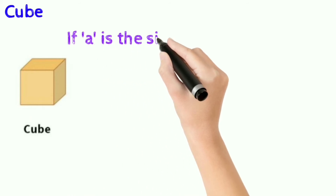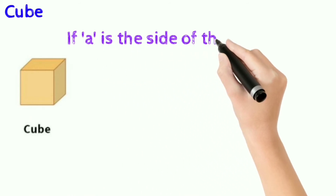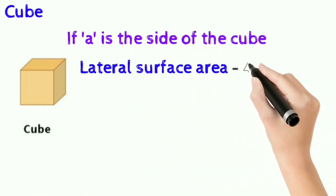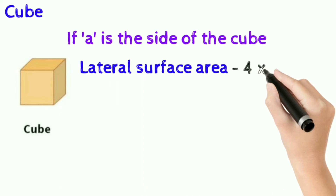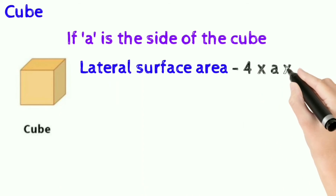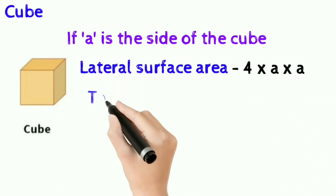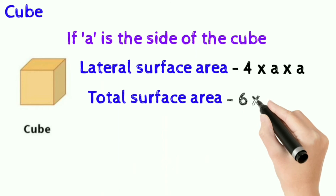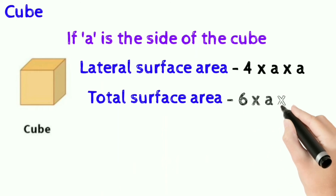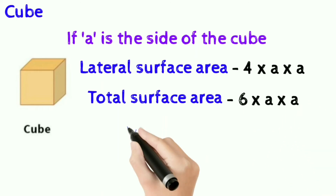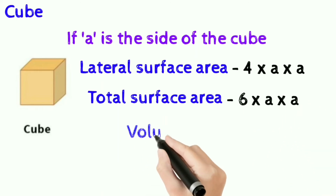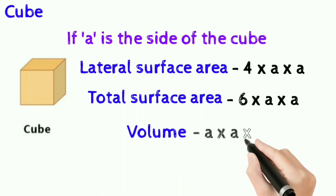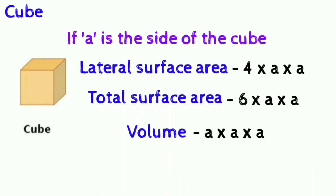Cube: if a is the side of the cube, lateral surface area is 4a squared, that is 4 into a into a; total surface area is 6a squared, that is 6 into a into a; and volume is a cubed, that is a into a into a.